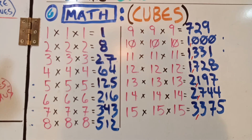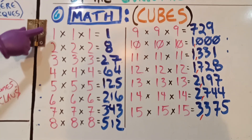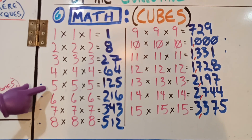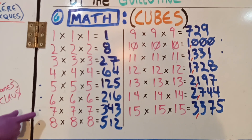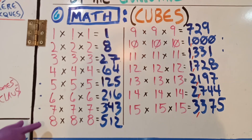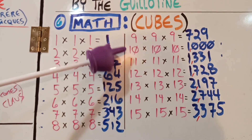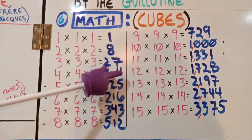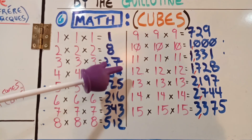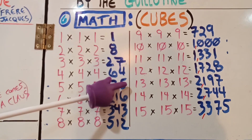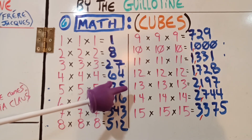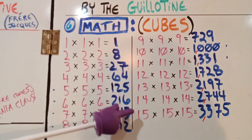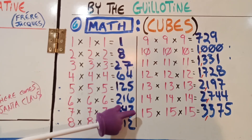For math, we're going to do the cubes. Here we go: 1, 8, 27, 64, 125, 216, 343, 512, 729, 1000, 1331, 1728, 2197, 2744, 3375.